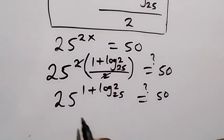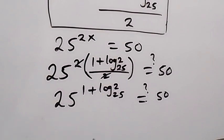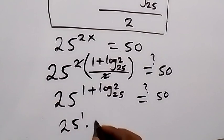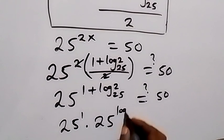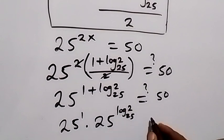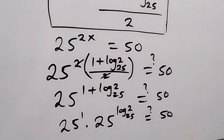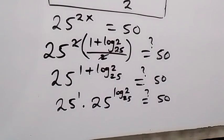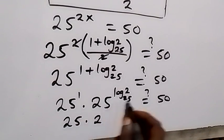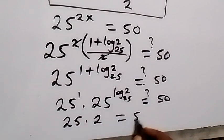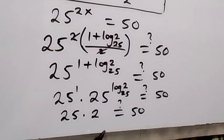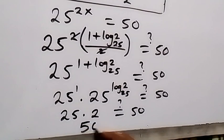In the next step we can separate this into two numbers of base 25, applying the law of indices. So this becomes 25 raised to power 1, times 25 raised to power log base 25 of 2, equals 50. From here, 25 raised to power log base 25 of 2 reduces to 2, so we have 25 times 2, which equals 50. And 25 times 2 is indeed 50, so 50 equals 50.